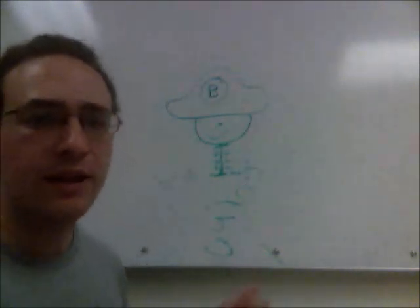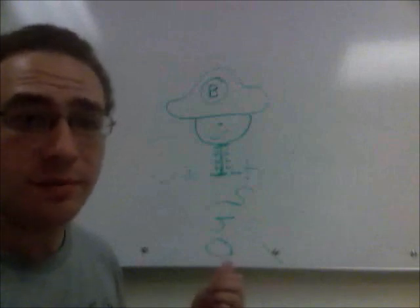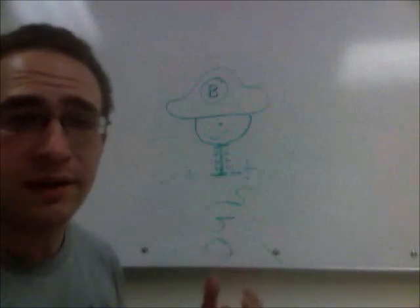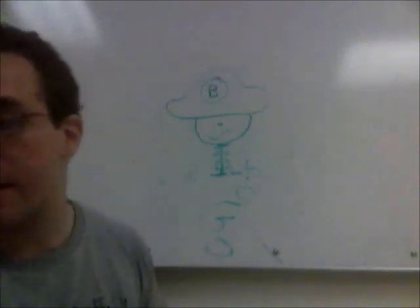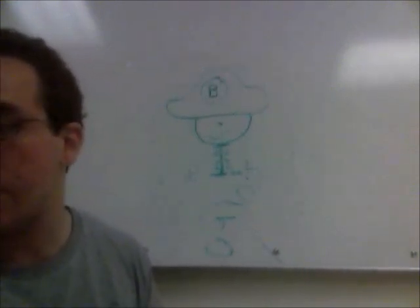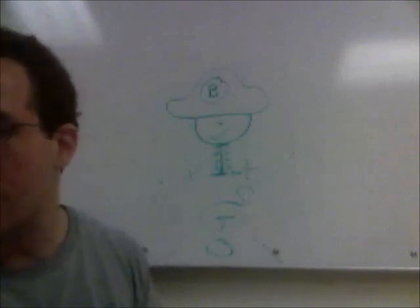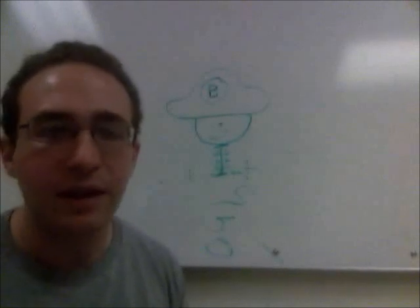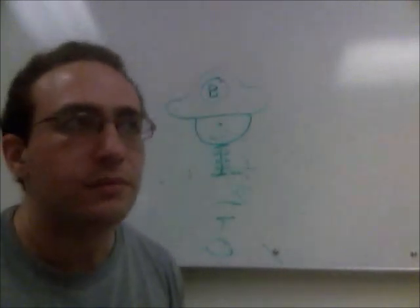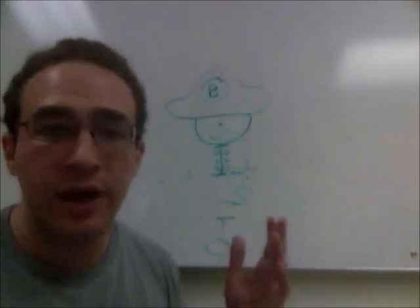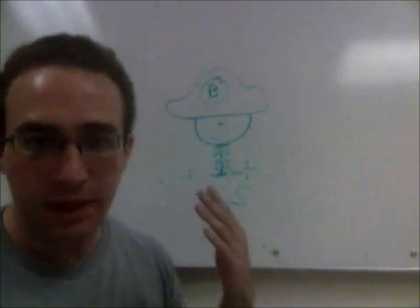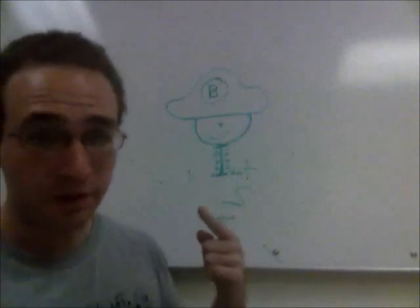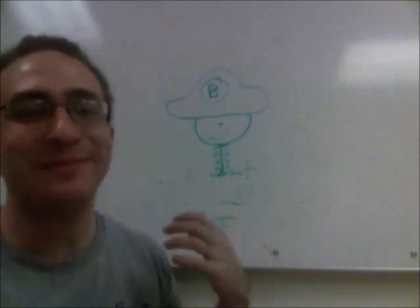The O down here represents the bladder. Oxybutynin is used to reduce urgency and reduce bladder spasms — it kind of paralyzes the detrusor. So we've got: the brain (benztropine), the eyes blocked by HAT, ipratropium and tiotropium for respiratory, scopolamine for motion sickness, glycopyrrolate for GI and lungs, and oxybutynin for the bladder. That's our muscarinic antagonist man.